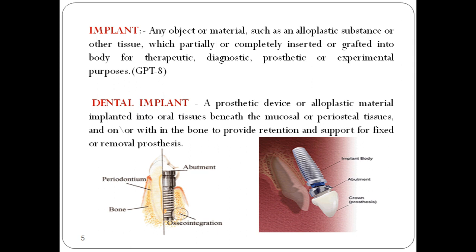Dental implant: a prosthetic device or alloplastic material implanted into oral tissues beneath the mucosal or periosteal tissues and within the bone, to provide retention and support for a fixed or removable prosthesis. As shown in the diagrams, we can identify the periodontium, bone, abutment, and the junction between bone and implant surface — the osseointegration zone — as well as the implant body, abutment, and crown.